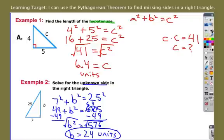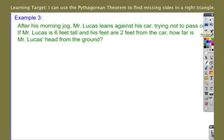That's the very basics. I want to get into a little bit of application here. So again, this could be used for a number of different things. The next one is just kind of a silly example here. So after this morning jog, I'm leaning against my car trying not to pass out. If I'm six feet tall and my feet are two feet from the car, how far is my head from the ground? The first thing here is that I'm leaning. It seems silly, but it's what I'm doing. And it's going to make my head less distance from the ground than my six feet height.